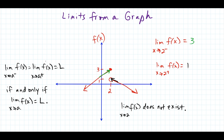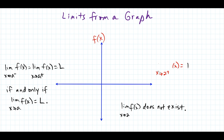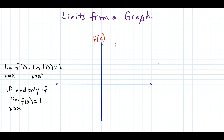The next case we should look at is what happens when we have asymptotes in the graph. We'll start off with vertical asymptotes and then talk about how to deal with the horizontal asymptote case. Let's say we have a vertical asymptote at the line x equals 3.